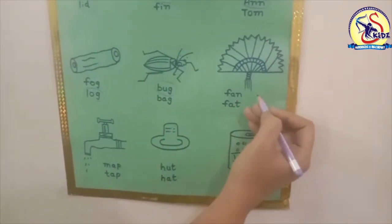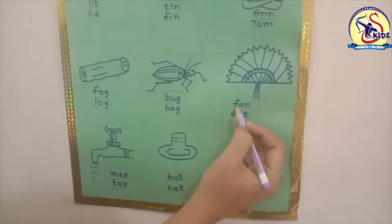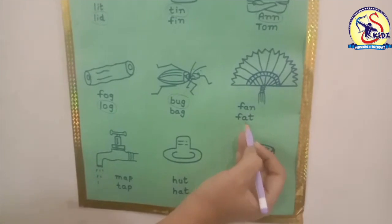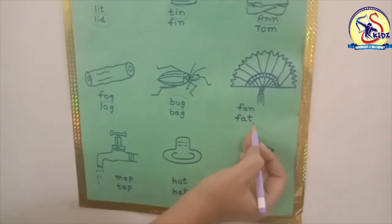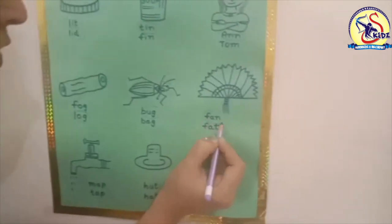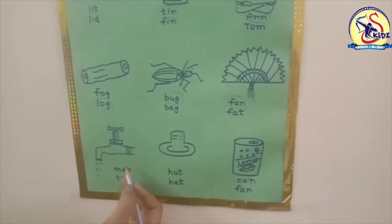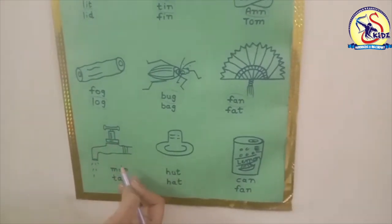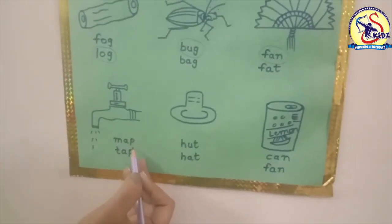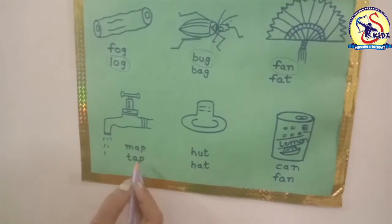Here is our next picture of a fan — F-A-N, fan. Is fan correct, or F-A-T, fat? Which is the correct word? Fan. Now circle the word fan. Our next picture is a tab — M-A-P, map, or T-A-P, tap.